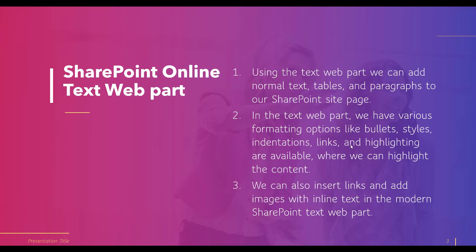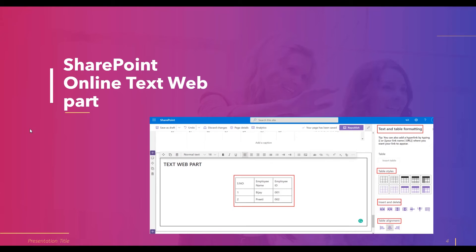We can also insert a link and image in the text web part and display them in the modern SharePoint site page. When we add a table inside the text web part, we can see the text and table formatting options. Under table, you can see table styles, options to insert and delete table rows, and table alignment. Formatting options also include bold, italic, and underline.